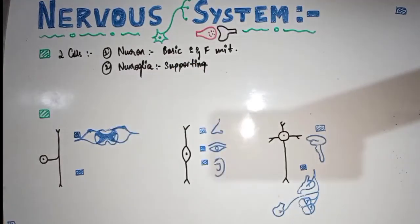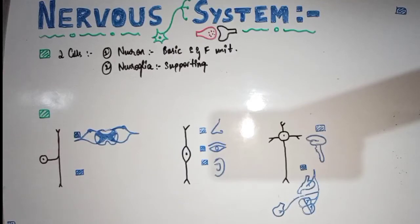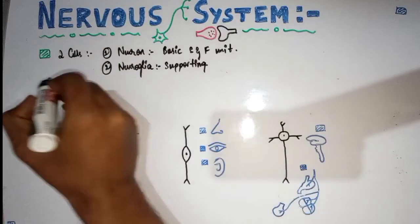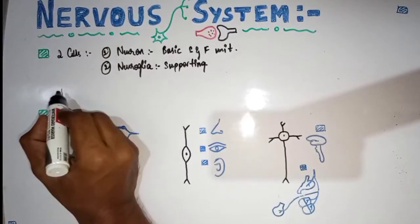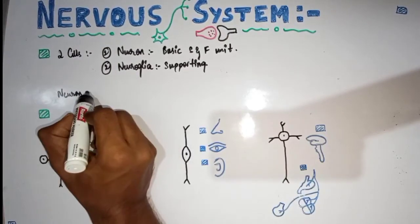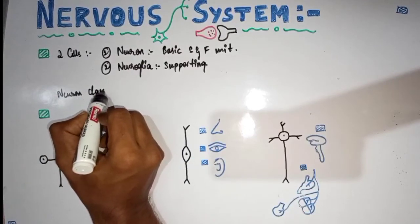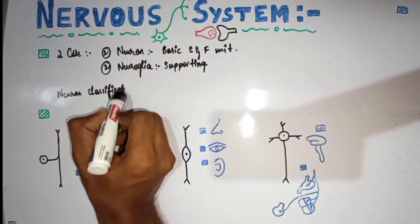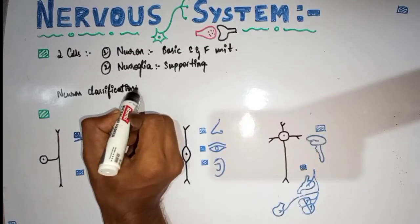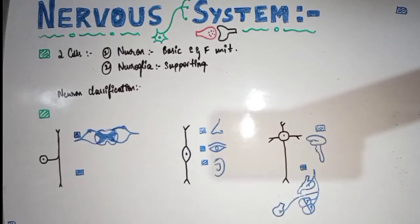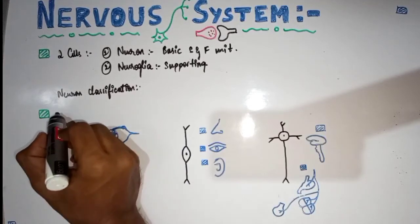Neuroglia, along with the neuron, helps in the conduction of impulses. Now for the classification of neurons — just as with the nervous system — there is an anatomical classification and a functional classification. I will discuss the anatomical classification first.